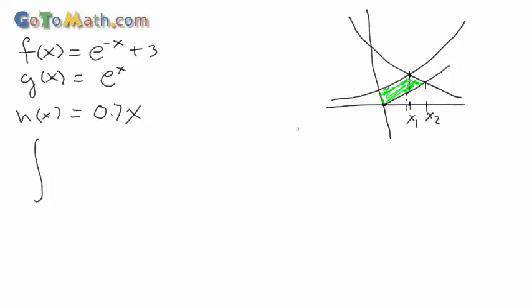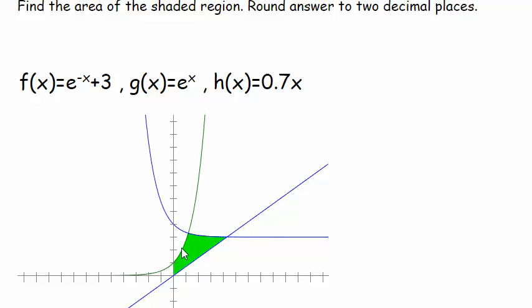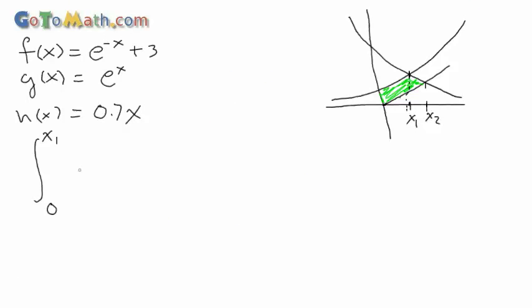So we got the integral going from zero to x of one. And it'd be this top curve minus the bottom. This is the piece right here we're looking at. So this would be g of x, so that'd be e to the x minus this guy here which is 0.7x dx. So you're going to need to figure out how to find x of one. So you're being quizzed basically. And we did this in the previous problem on how to find this guy right here.